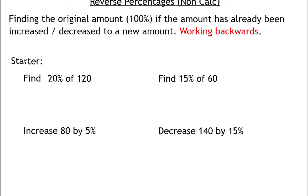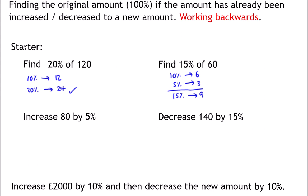For the first one then, always start by finding 10%. So 10% would be 12, and to get 20%, you would double that, which is 24. Again, start with 10%, this time 10% is 6. We need to make 15%, so I'll need 5%. If 10% is 6, 5% is 3. If I add them up together, 15% is 9.